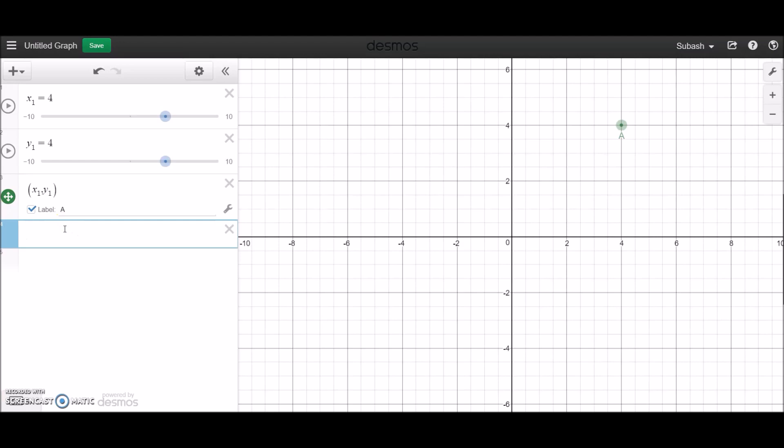Now I'd like a second point and I'm going to call this x2 and y2, and the coordinate is going to be x2 and y2.